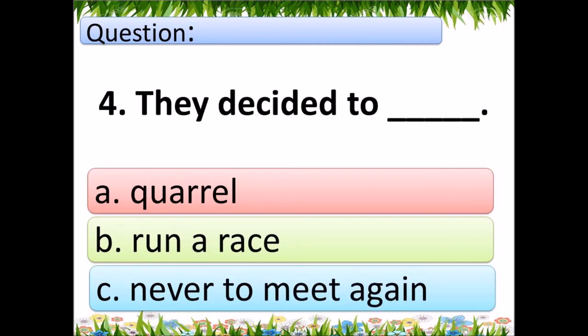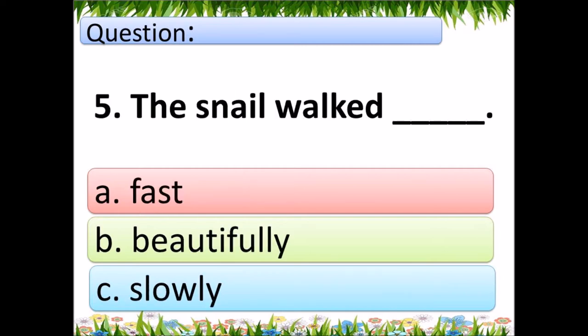Three. The snail was very blank. A. pleased, B. angry, C. happy. Four. They decided to blank. A. quarrel, B. run a race, C. never to meet again.